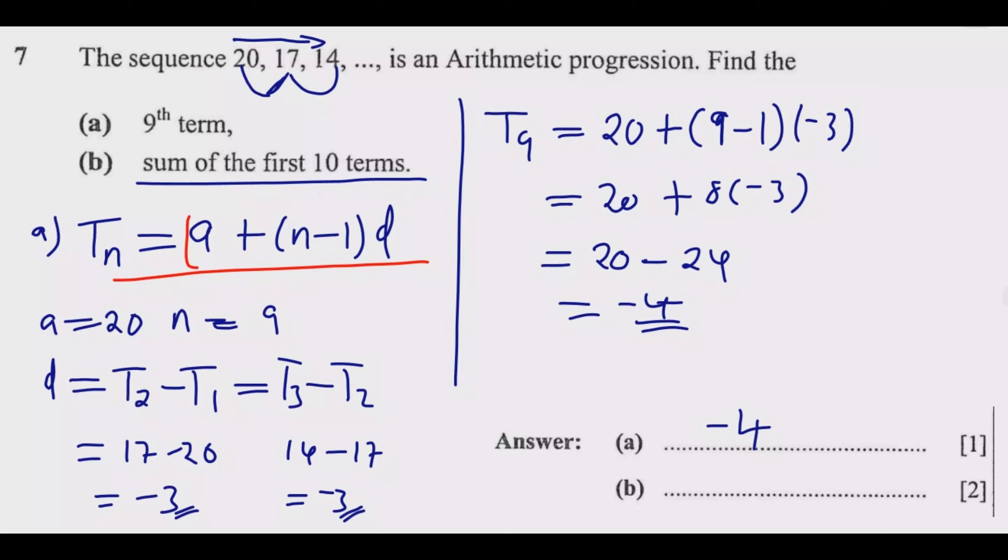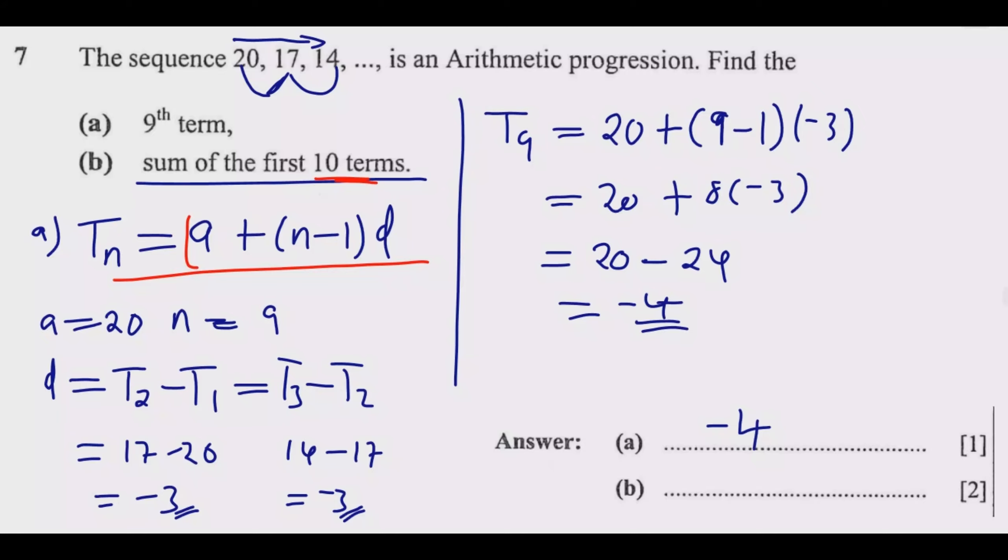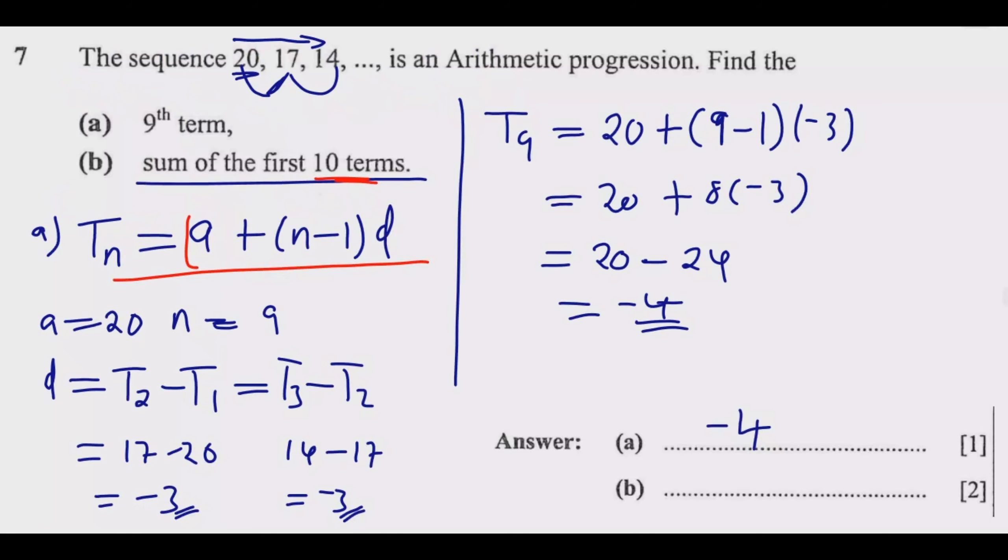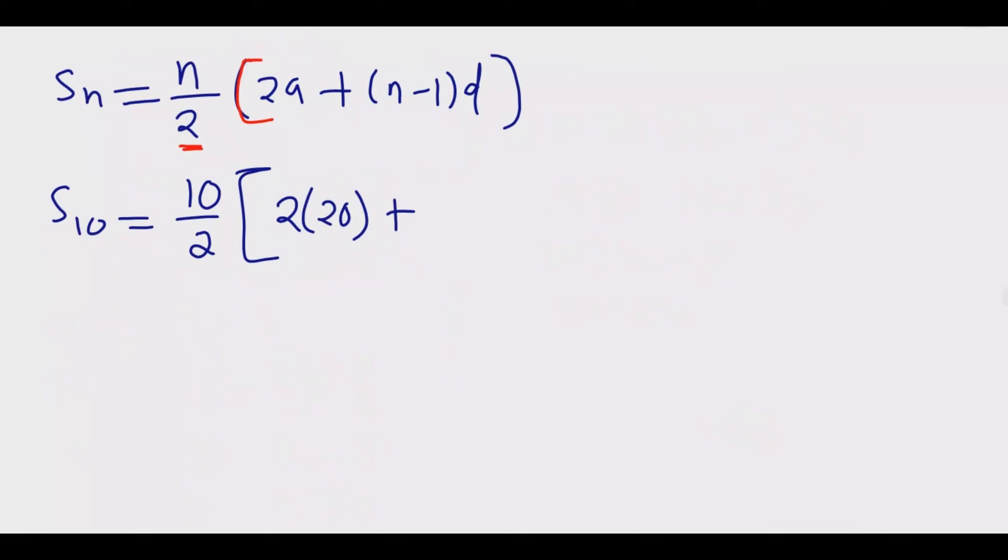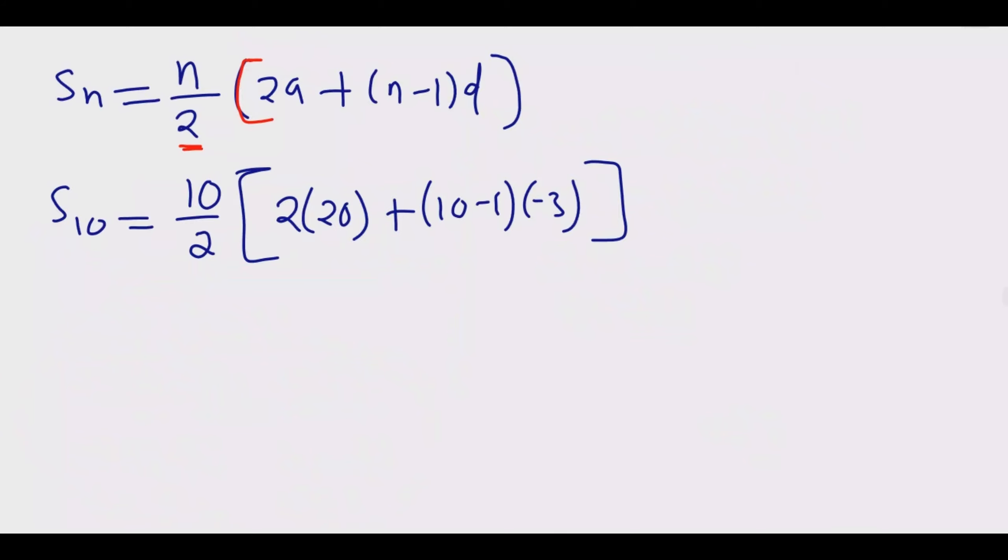If you notice the difference, we're just introducing a 2 in the initial formula we used to find the nth term. Now let us substitute. We are looking for the first 10 terms, so n becomes 10. So it will be S10 equals 10 divided by 2 then multiply by 2 times a. A is 20 which is the first term, plus 10 minus 1 times negative 3 which is the difference. I just want to ensure that you are with me, so that we are together.